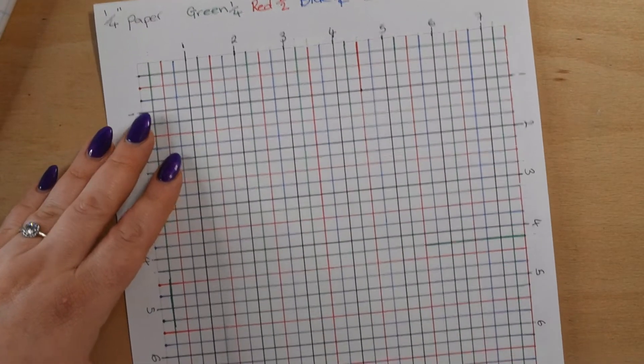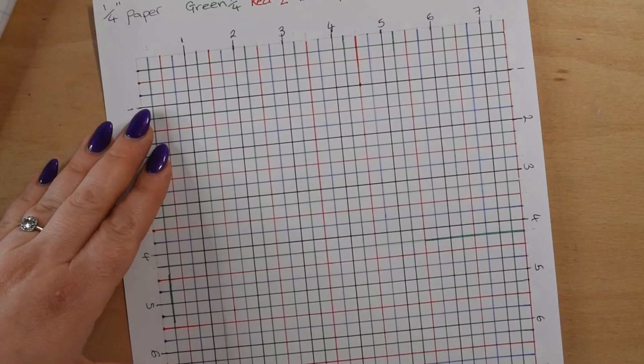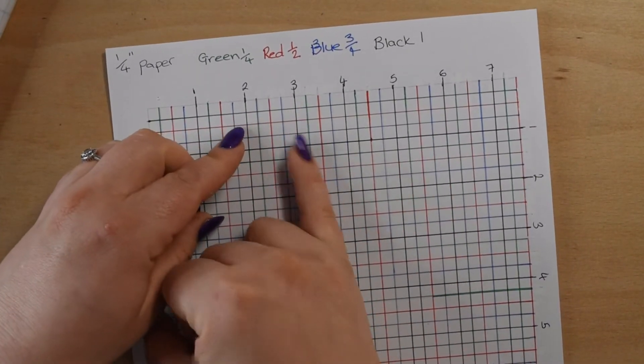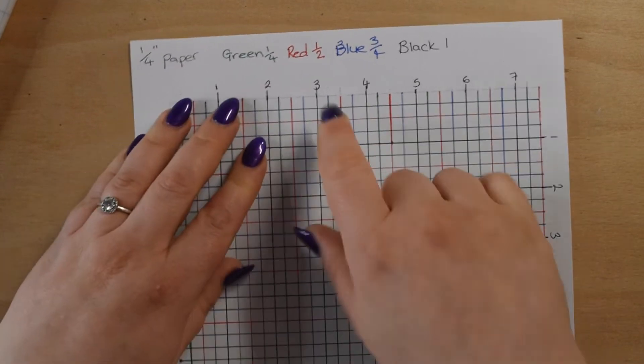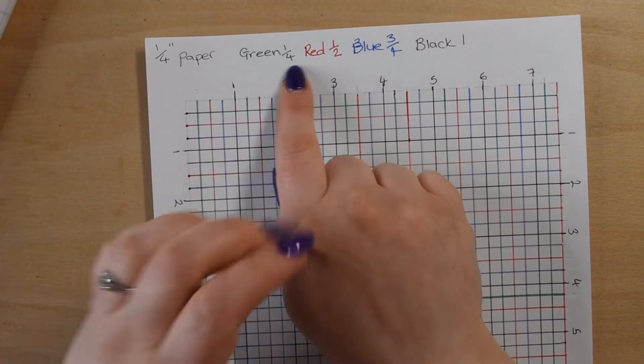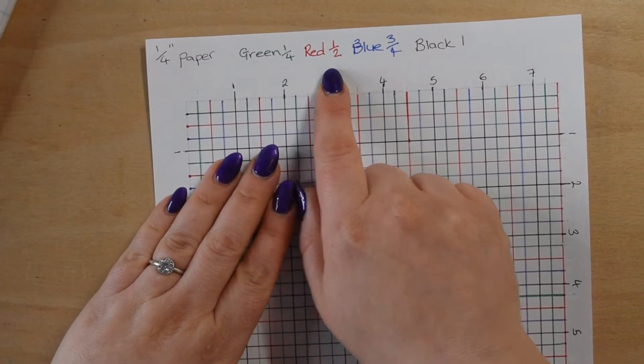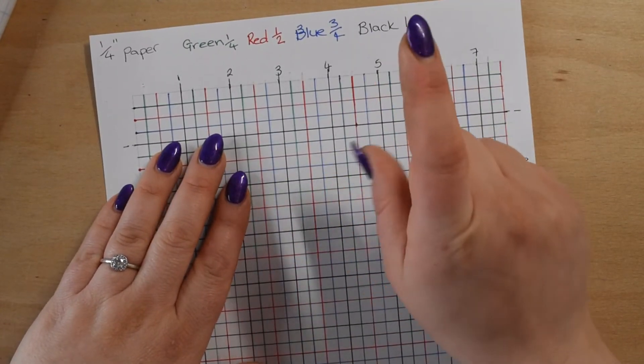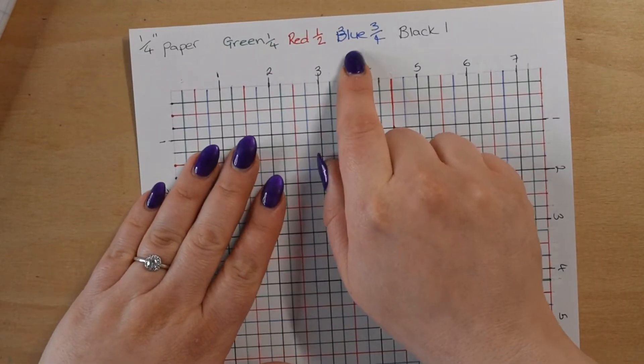If you want something that's three and a half inches, you'd go along to the three and then just think right, I need up to the red line. I've used green for the quarter inch, red is half, blue is three quarters, and the black lines are for one full inch. You don't have to use these colors.